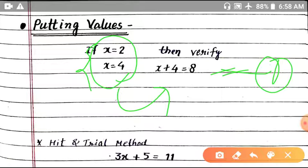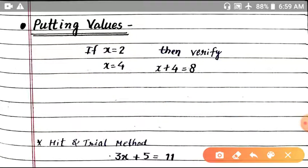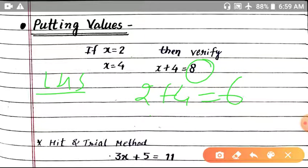We have two numbers given here and this is our equation. The equation is x plus 4 equals 8. Now how do we put it in the left-hand side? If x is 2, then 2 plus 4 is 6. So this value doesn't verify the equation. This means x equal to 2 is not the correct value.